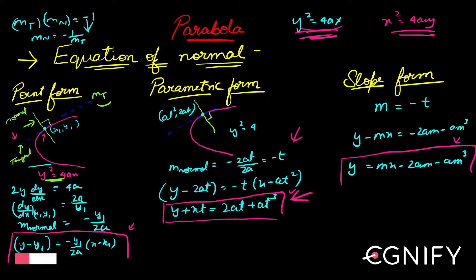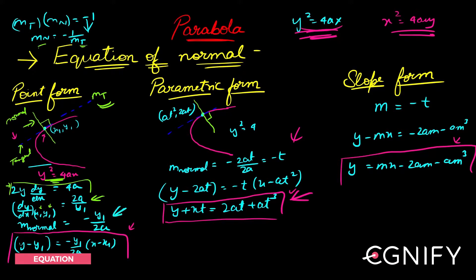I'll first find the slope of the tangent mₜ by differentiating the curve. We get dy/dx, put (x₁, y₁), and get the slope of the tangent — we've already seen this. The slope of the normal is −1 divided by the slope of the tangent, which gives −y₁/2a. Using the slope-point form y − y₁ = m(x − x₁), we get the point form of the normal.